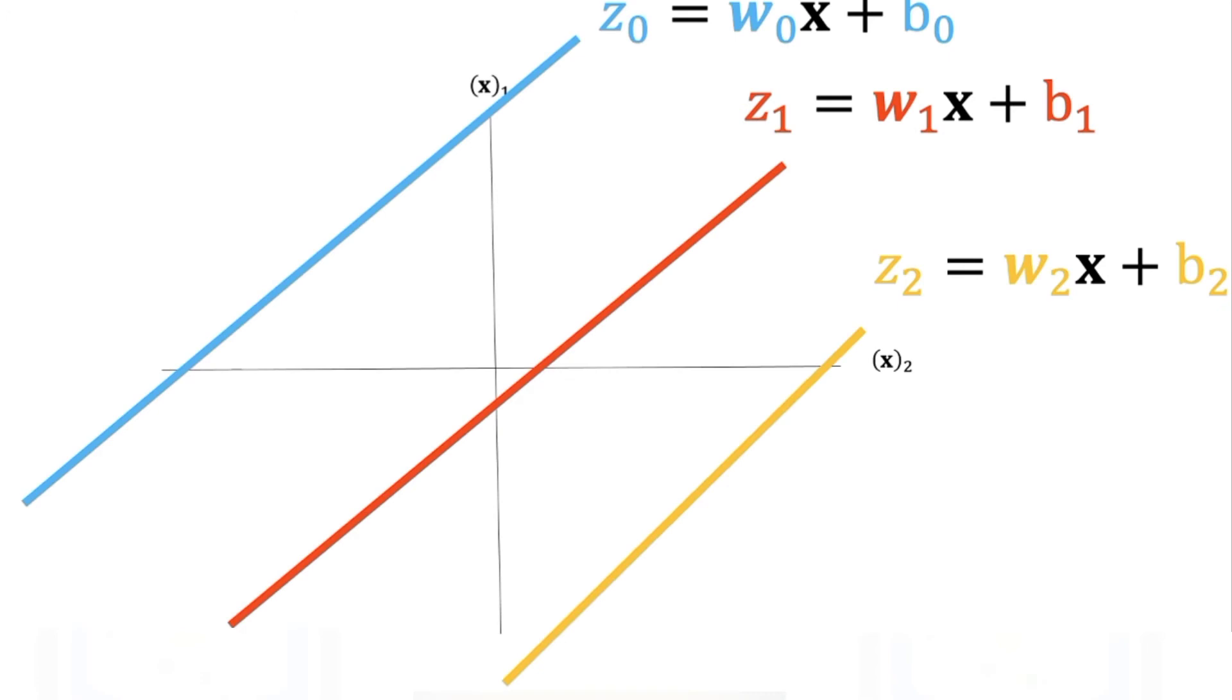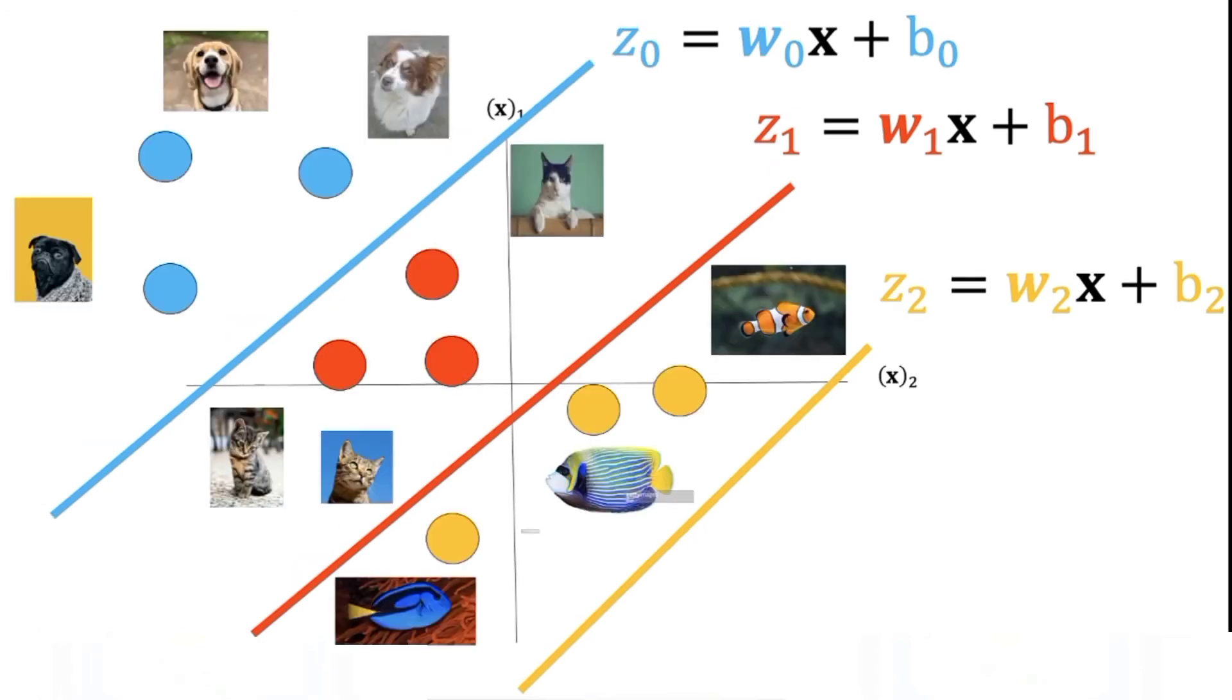This is the plane where z equals 0. The line is where the decision plane intersects with the plane z equals 0. We can overlay our sample images. We see the lines split the classes.